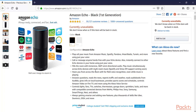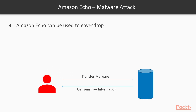Now, how can we perform pen testing on Amazon Echo and what will the results be? For example, if we want to perform a malware attack on Amazon Echo — is it possible? You can see that Amazon Echo can be used to eavesdrop. Eavesdropping means listening to conversations — for example, two persons are communicating and a third party is secretly listening.